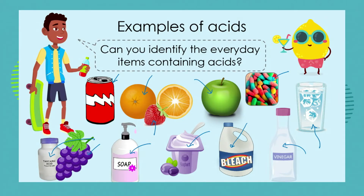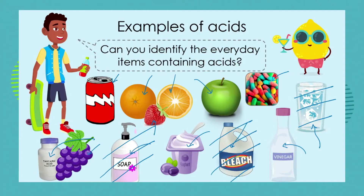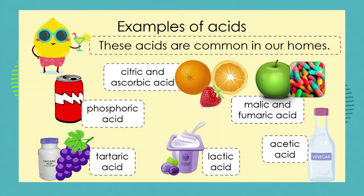So how did you do with our roundup of different household and everyday items? Were you able to identify the acids? In fact, it is only the soap, the bleach, and the water that are not acidic. All the rest of the substances do contain acids. For grade 7, you do not need to know lists and lists of acids, but you must be able to identify that many fruits are acidic and something like soap and bleach is not. Let's share the names of some of these acids with you.